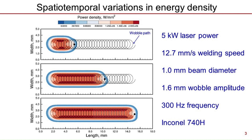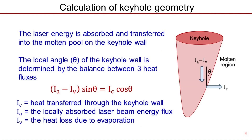To understand the effects of process variables on spatio-temporal variations in energy density and fusion zone geometry, we developed a three-dimensional model of heat and fluid flow during keyhole mode wobble laser welding, by extending keyhole welding models developed and rigorously tested at Penn State over an extended time. At first, the geometry of the keyhole was computed by performing a heat balance as well as a pressure balance on a point-by-point basis on the keyhole wall.